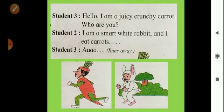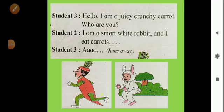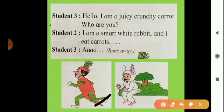Next, Student 3 said, 'Hello, I am a juicy crunchy carrot. Who are you?' Student 2, the rabbit, said, 'I am a smart white rabbit, and I eat carrots.' Student 3 said 'Ah' and ran away. The crunchy and juicy carrot also ran away because they feared the rabbit, thinking the rabbit would eat them.